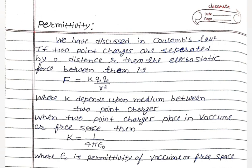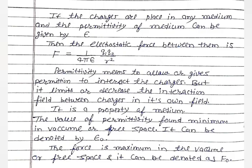When both point charges are placed in vacuum or free space, k is equal to 1 upon 4π epsilon-naught, where epsilon-naught is the permittivity of vacuum or free space. If charges are placed in any medium, the permittivity of that medium is given by epsilon, and k equals 1 upon 4π epsilon. So the electrostatic force is F equals 1 upon 4π epsilon times q1 q2 by r squared.